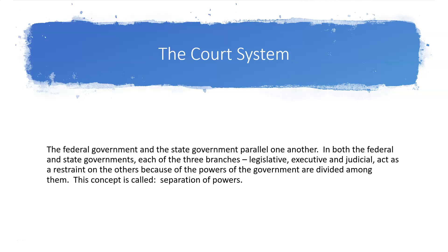The federal government and the state government parallel one another. In both the federal and state governments, each of the three branches of government — established by the Constitution — are legislative, executive, and judicial. They act as a restraint on the others because the powers of the government are divided among them. This concept is called separation of powers.